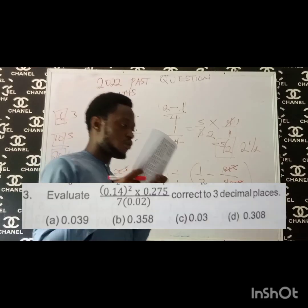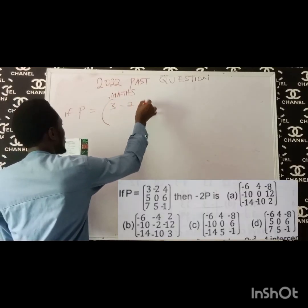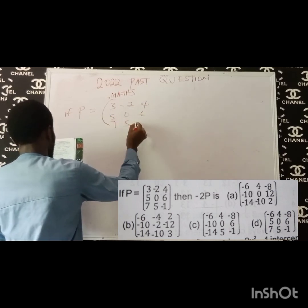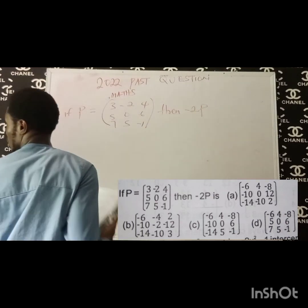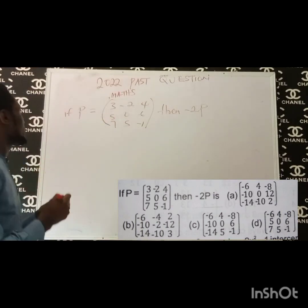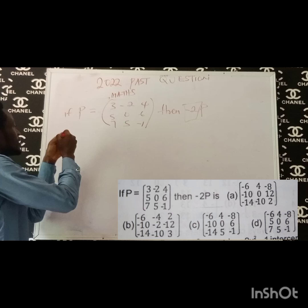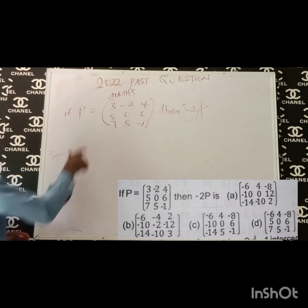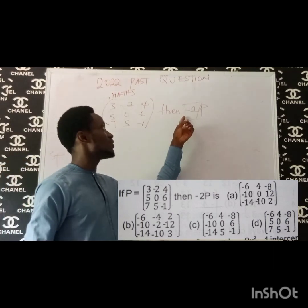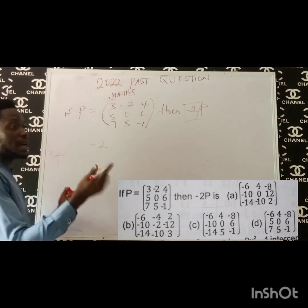The next question is question 4. If P is equal to the matrix [3, -2, 4, 5, 0, 6, 7, 5, -1], then minus 2P is equal to what? This is a very simple question. Minus 2P means we should multiply everything in matrix P by minus 2. If the question said find 3P, it means multiply all entries by 3. So here, we multiply every element by minus 2.